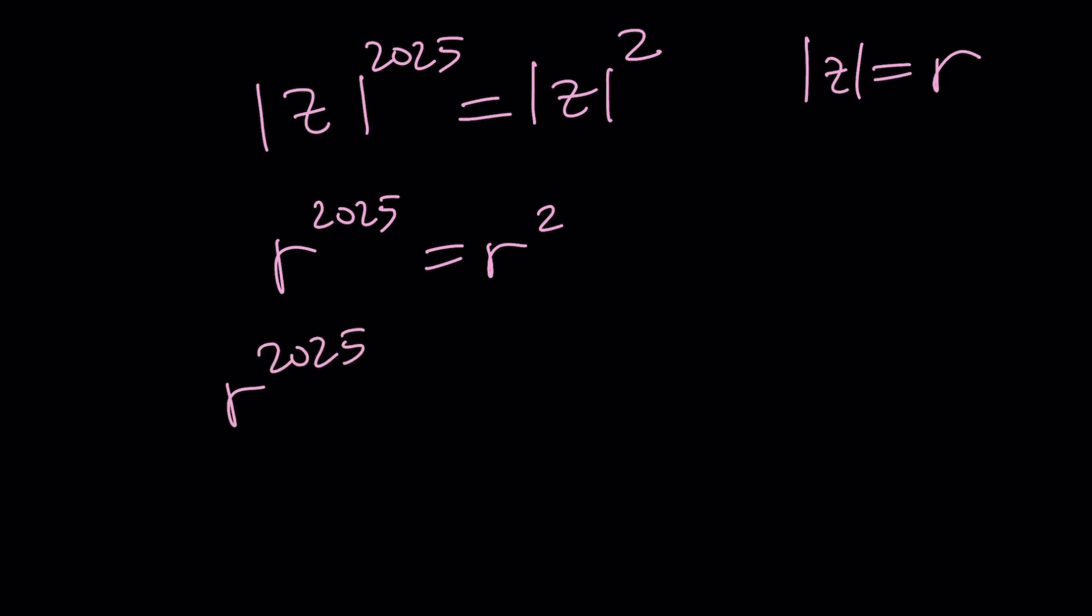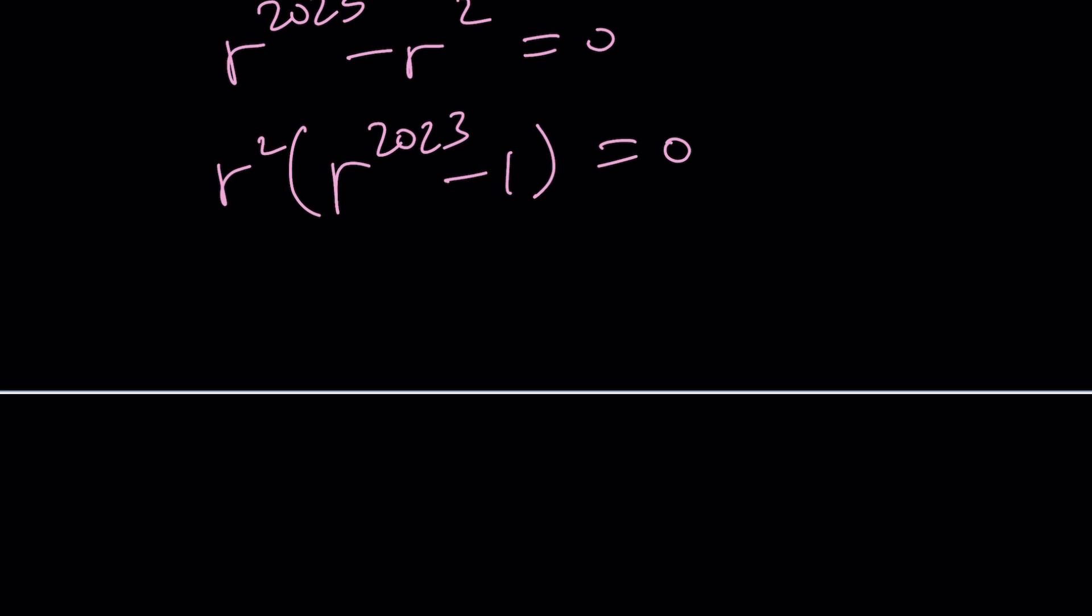From here, we get something super nice. Let's go ahead and call absolute value of z, r. We get r^2025 = r^2. Don't cancel out anything. Put everything on the same side. And then factor. And you're going to get r^2(r^2023 - 1) = 0. Now, if r^2 = 0, then r = 0. r = 0 means a^2 + b^2 = 0. Because a and b are both real numbers, this means z = 0. That's not very interesting, is it? But it's still one of the solutions.